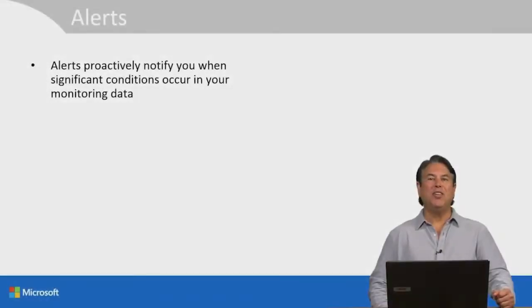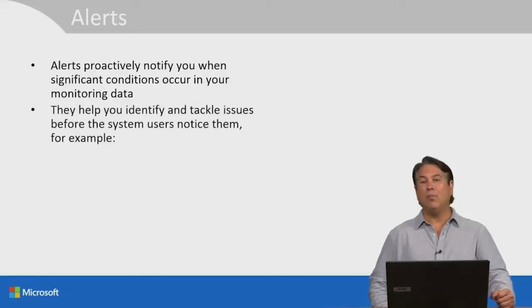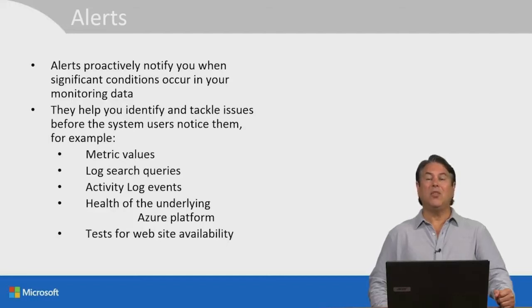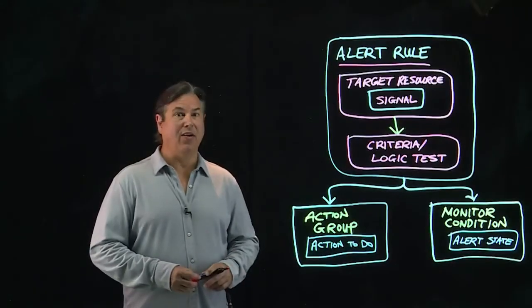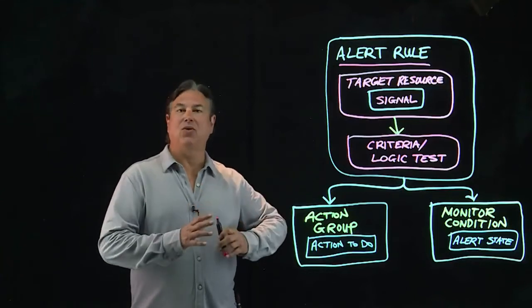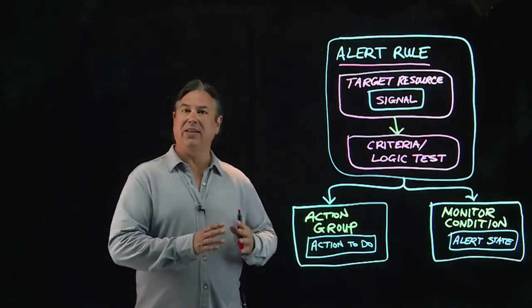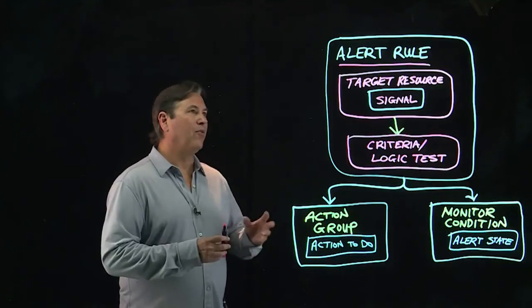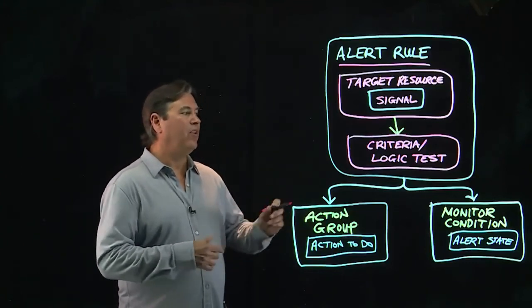Alerts proactively notify you when significant conditions occur in your monitoring data. They can help you identify and tackle issues before system users notice them — for example, metric values, log search queries, activity log events, health of the underlying Azure platform, and testing for website availability. Let's go to the lightboard and see how alerts actually work. One thing to remember about alert rules is that we separate the actual alert rule from the actions that we take and from the alert itself.